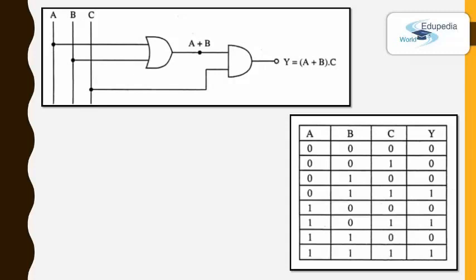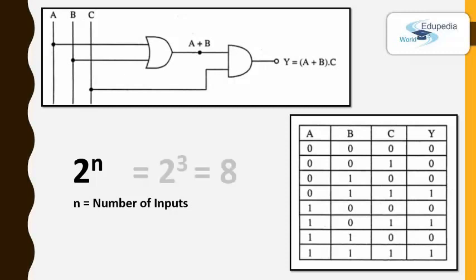Now the next thing is drawing the truth table for the boolean expression. The first step is identifying the columns of the table. The first columns are the inputs: A, B, and C. Then if you like, you can have the intermediary steps, and the final column is the final output. The second step is finding the number of rows using the formula 2 to the power of N, where N is the number of inputs. Here there are 3 inputs A, B, C, so the formula gives 2 to the power of 3, which means 8 rows.